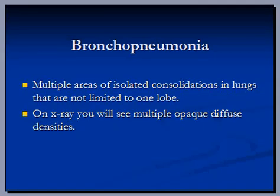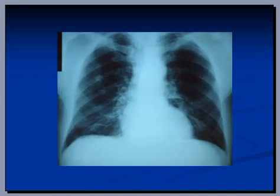Bronchopneumonia is defined as multiple areas of isolated consolidations in lungs that are not limited to one lobe. On x-ray you will see multiple opaque diffuse densities, and here is an example.